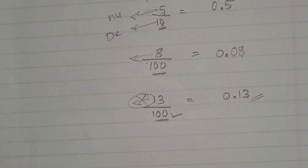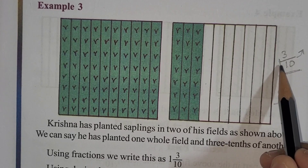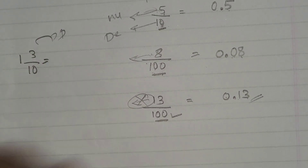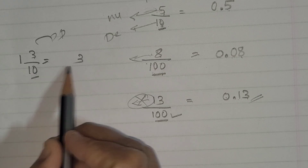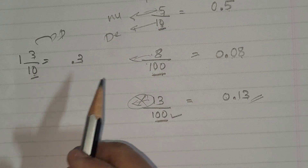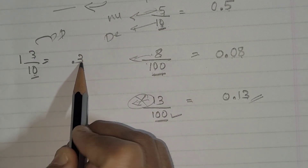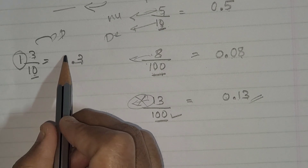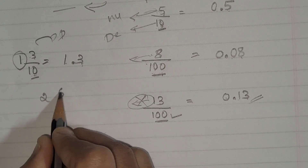So now you know how to convert a fraction to decimal form when you have denominators like 10, 100, 1000, or 10,000. Coming back to our example: 1 and 3 by 10. Write the numerator three; one zero in denominator means place the decimal point after one digit. Writing from right to left: three, then point, then one. So the answer is 1.3.